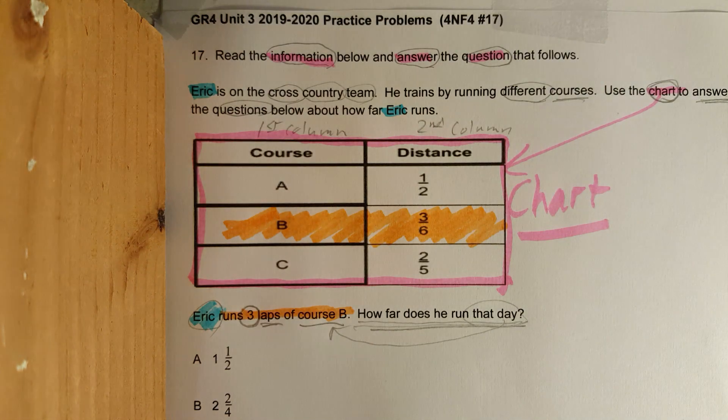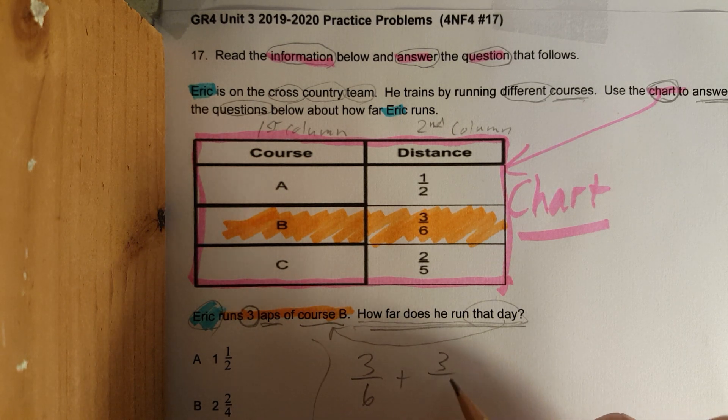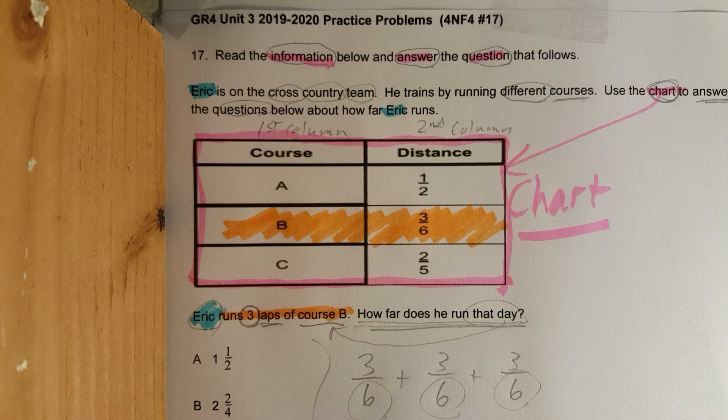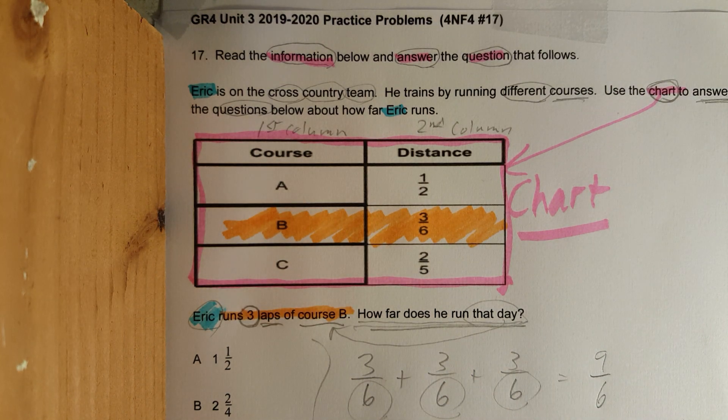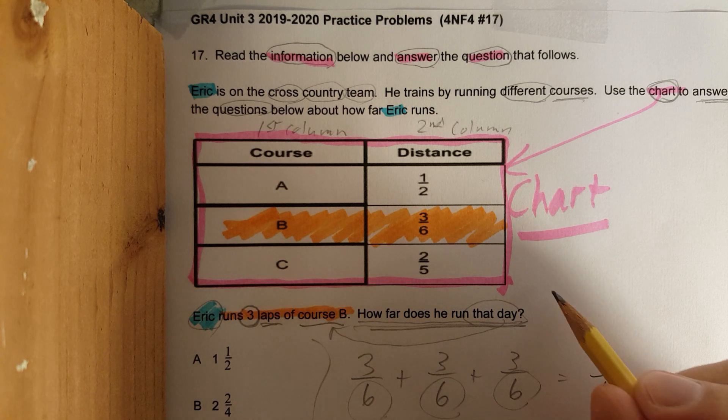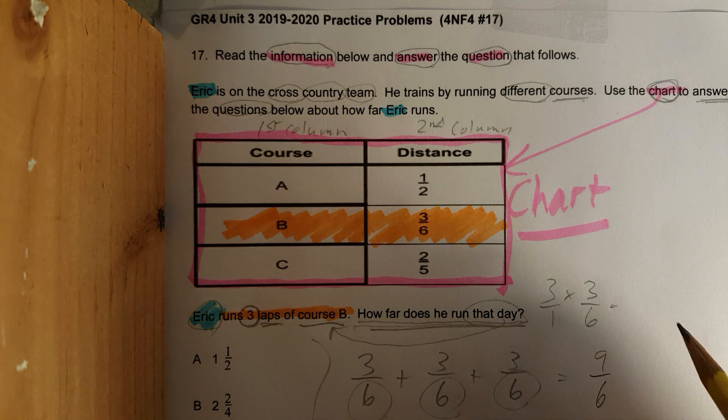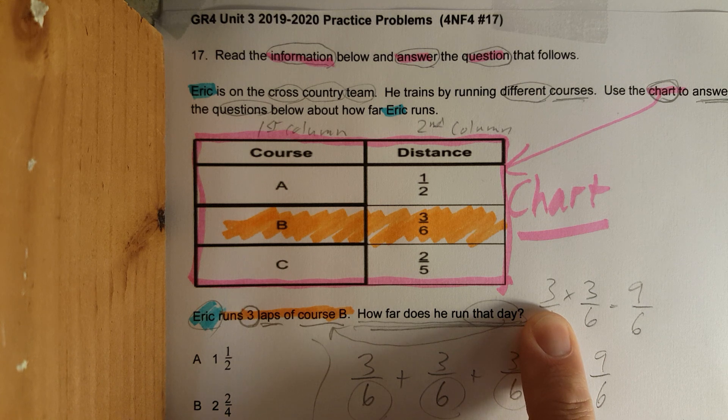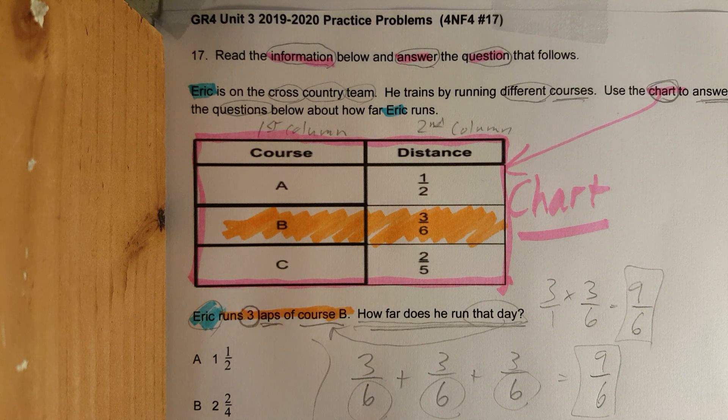Now we could do it a couple different ways. He runs three laps of course B. That could be 3/6 + 3/6 + 3/6. Denominator stays the same. We add the numerator: 3 + 3 + 3 is 9. We get 9/6. Now another way to solve that, we could have multiplied 3 × 3/6. Here comes the rain. 3 × 3 is 9/6. Remember, when you are multiplying a whole number and a fraction, you just take the top number times the top number. Notice how these are exactly the same, but there is one major problem. I'm going to move down.